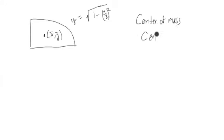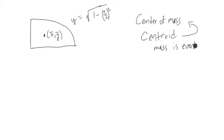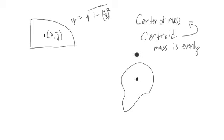A centroid is the same idea as a center of mass, except it assumes that the mass is evenly distributed per unit area or volume or whatever we are dealing with. So this means mass is evenly distributed throughout the region. The only real thing that is of importance is the geometric shape, because more shape means more mass and less shape means less mass. So basically, geometrically, we're looking for a geometric center — and that's what centroid is. Centroid is a geometric idea because we're ignoring mass variation, assuming it's evenly distributed per unit area, so the only thing that contributes is the actual geometry of the shape itself.